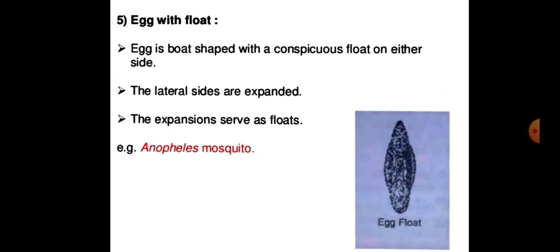Egg with float: the egg is boat-shaped with a conspicuous float on either side. The lateral sides are expanded and the extensions serve as floats. Example: Anopheles mosquito.